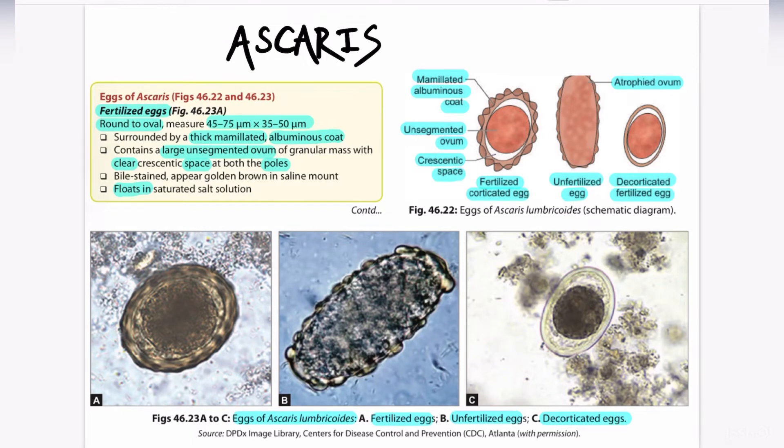Hello everyone, today we are going to study about the eggs in microbiology. First of all, we are going to discuss about the eggs of Ascaris lumbricoides. There are mainly two types of eggs produced by Ascaris lumbricoides.